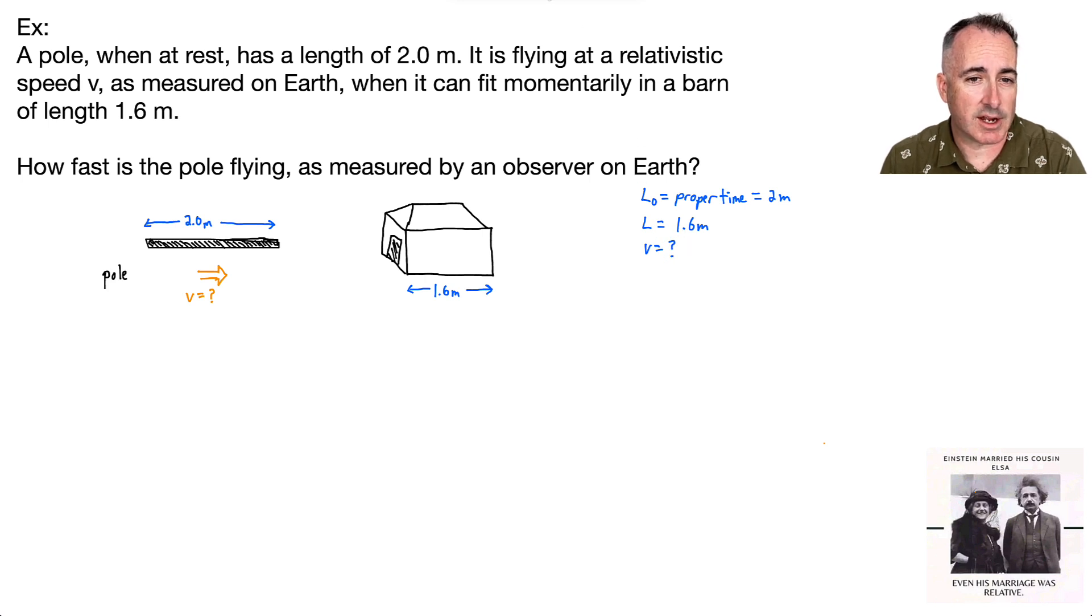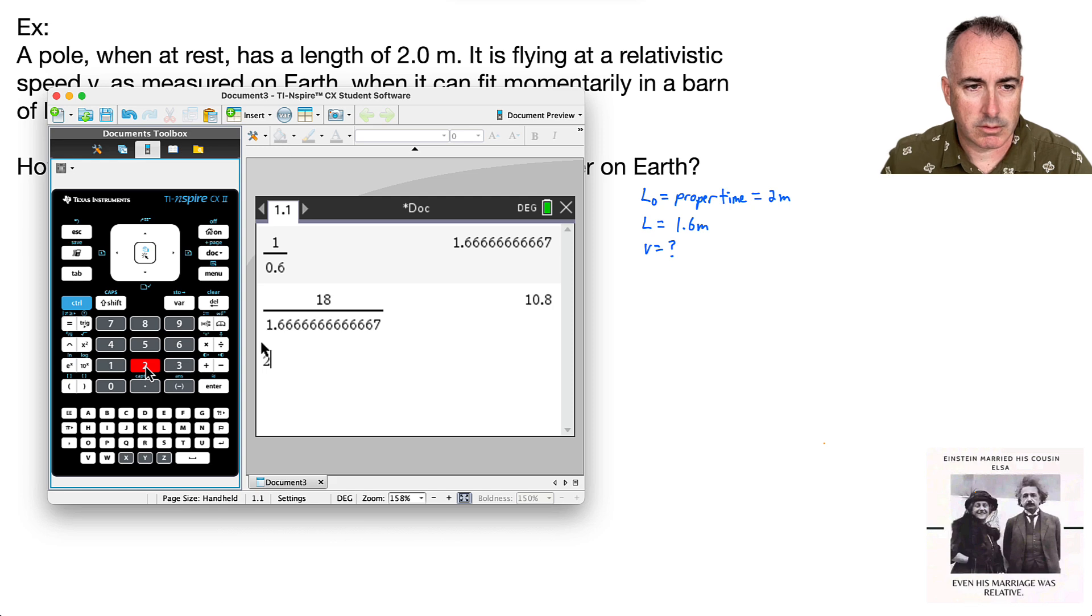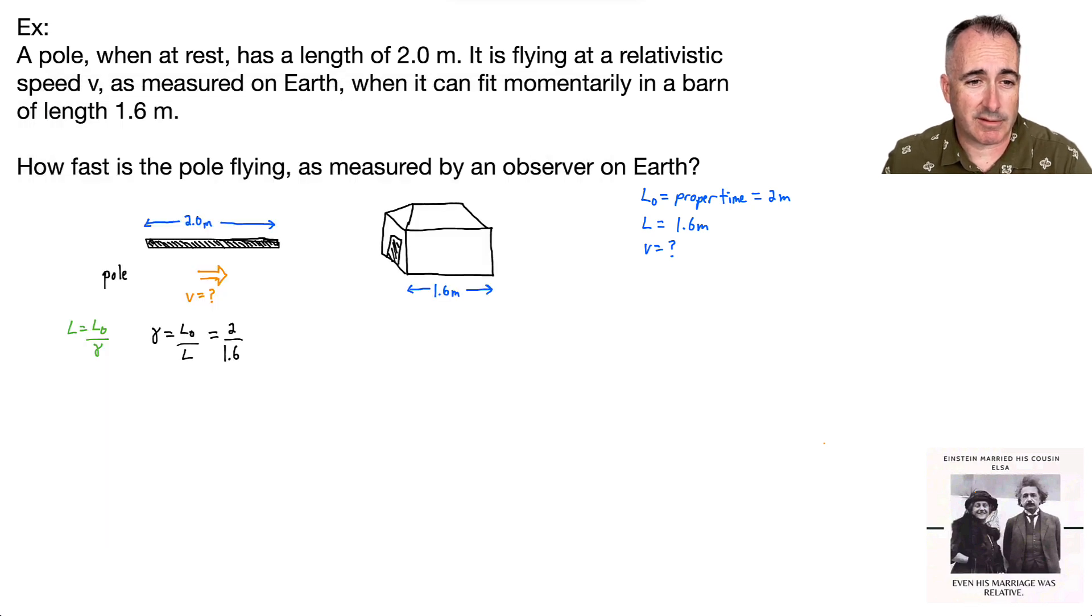So let's use the equation again. L equals L0 over gamma. If we're looking for gamma, gamma's got the speed in it. So let's solve for gamma. Gamma is going to be L0 over L. That's going to help us because we can put in L0, which is 2, and L, which is 1.6, and divide those two numbers. So 2 over 1.6 gives me 1.25. So gamma equals 1.25.